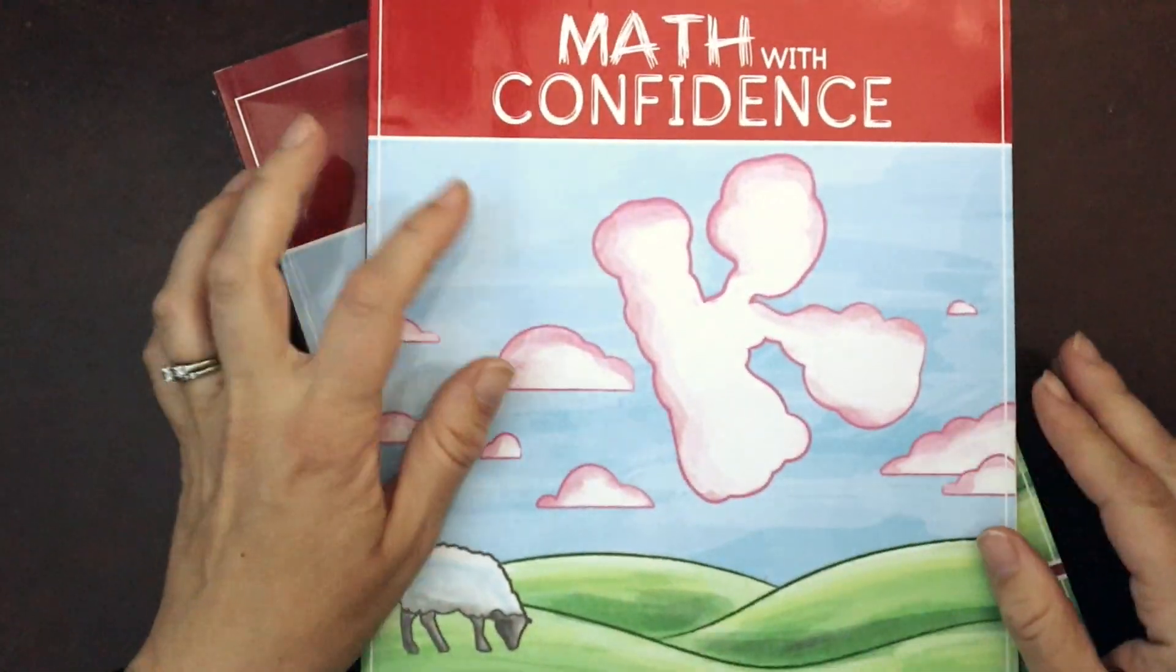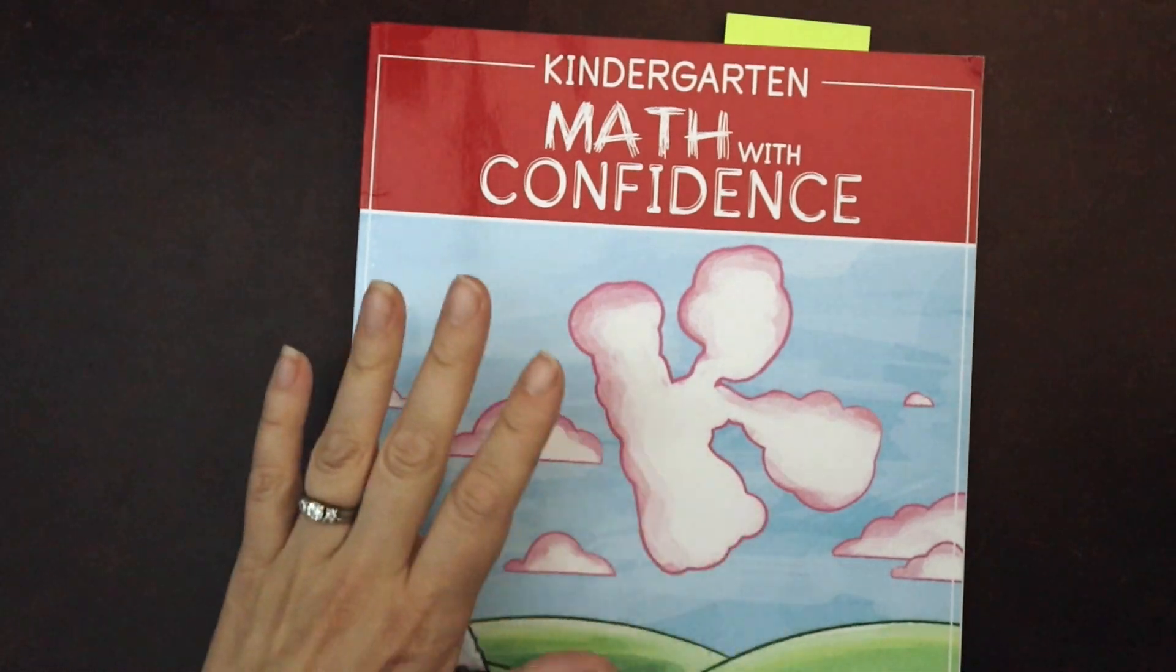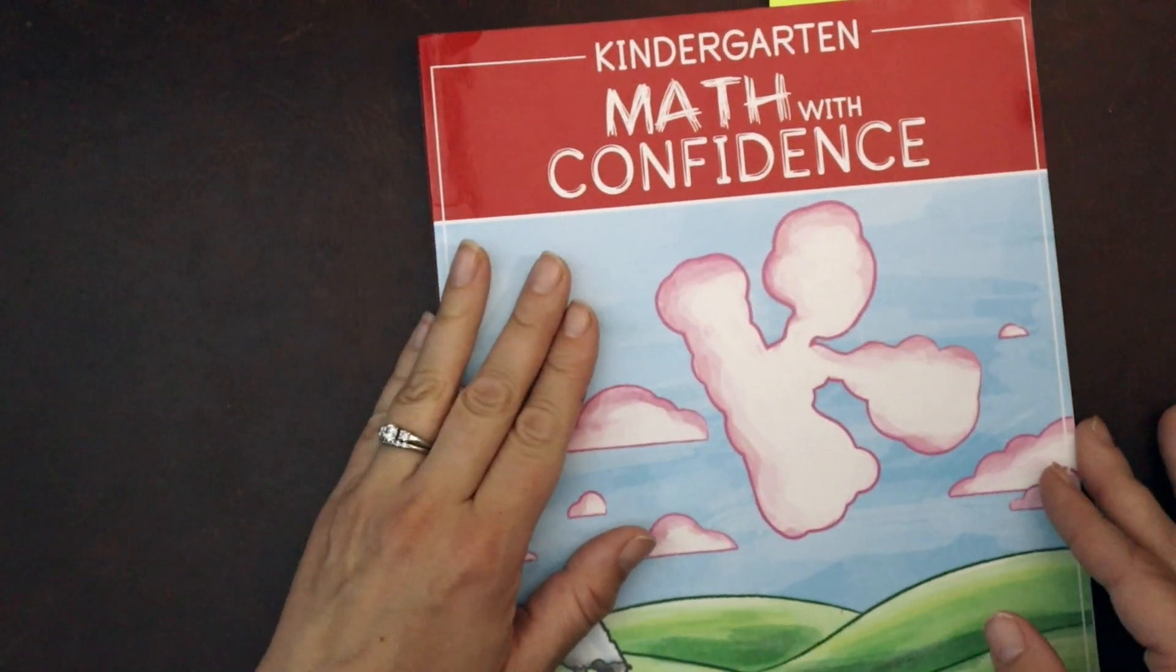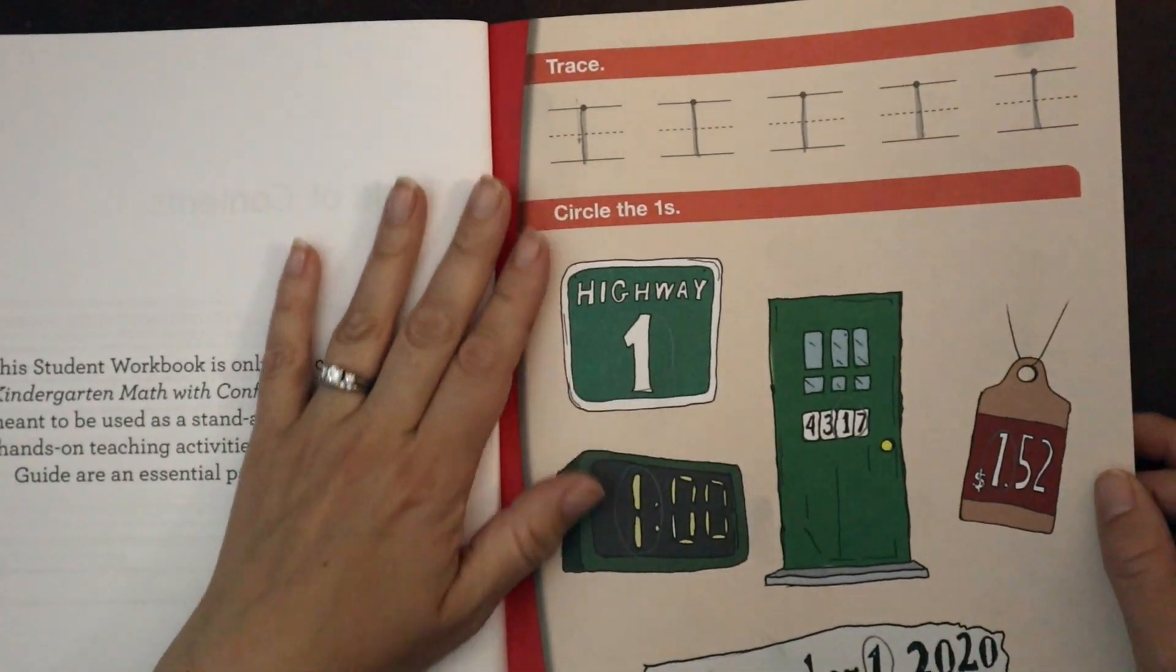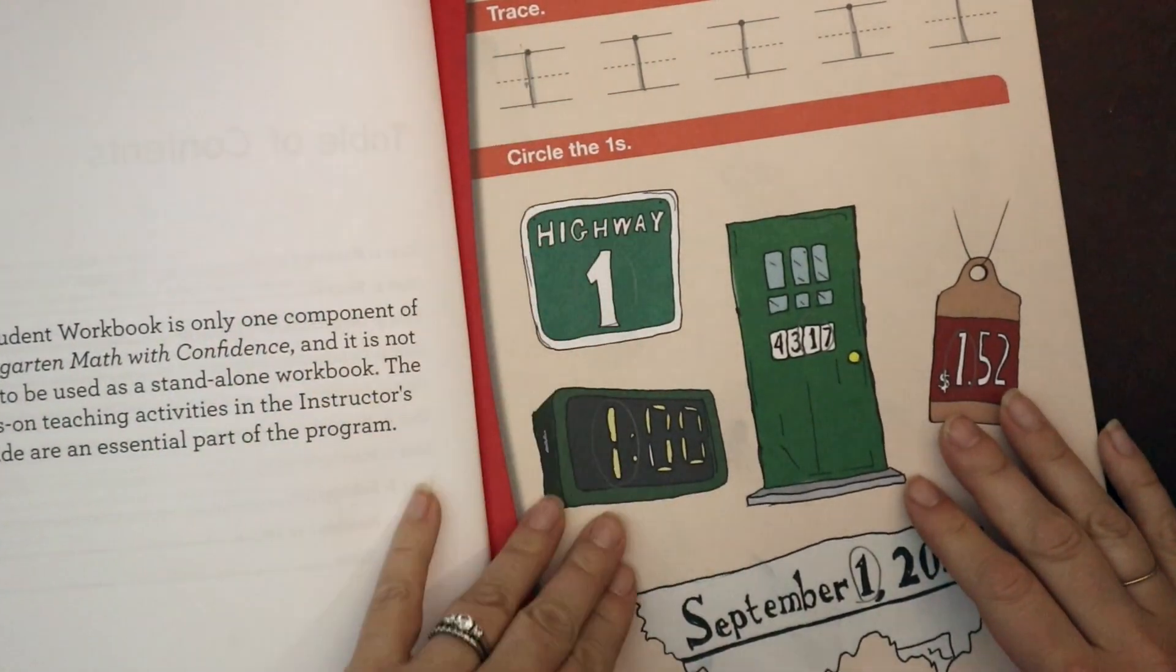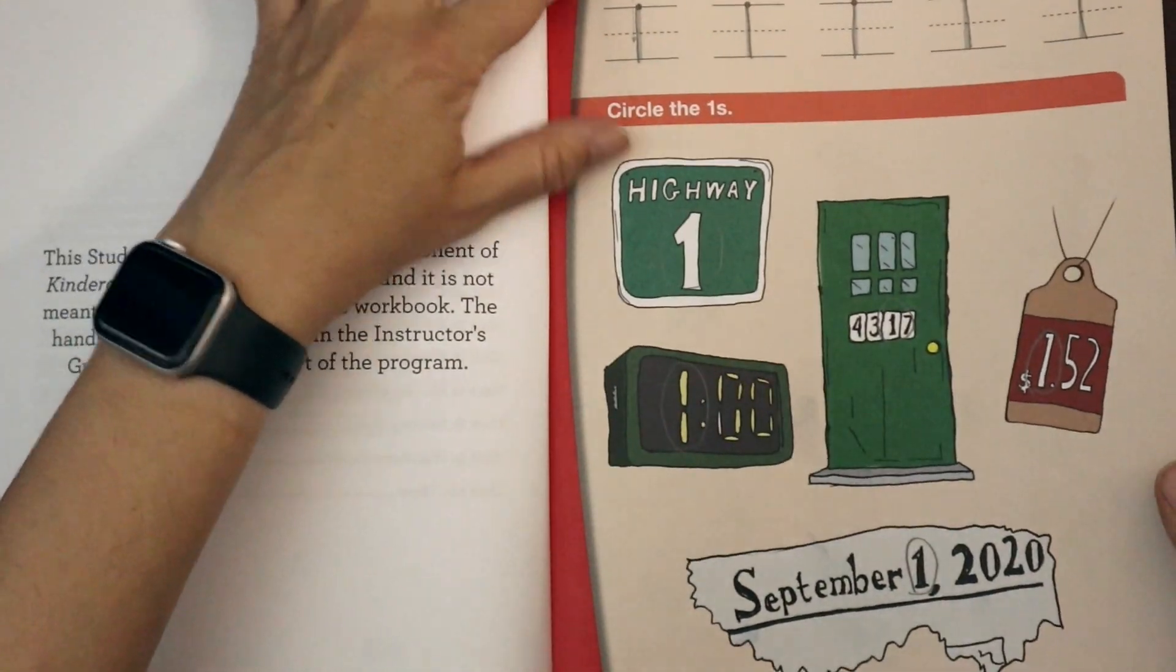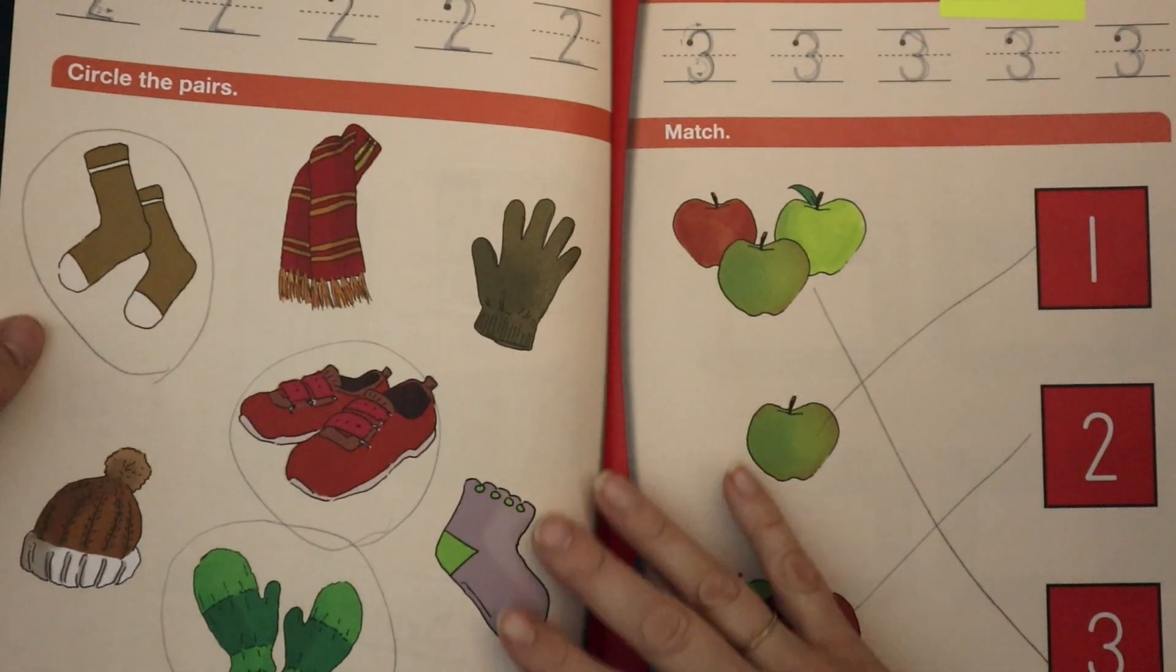Let's look at the workbook. The workbook is very straightforward. It is very simple. There is one page per lesson. This is meant just to give your child some workbook practice and some pictorial representation. So one page per lesson means this is your page for lesson 1.1 and the back is another lesson.